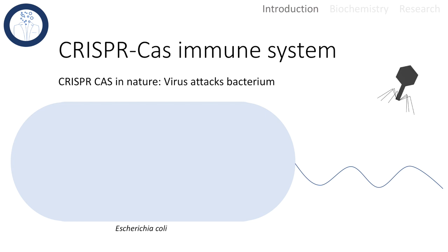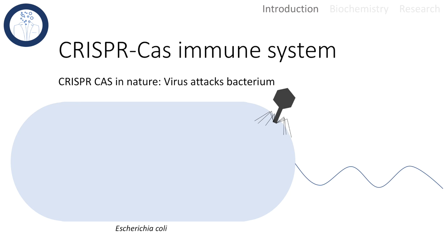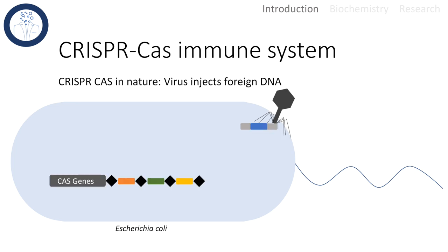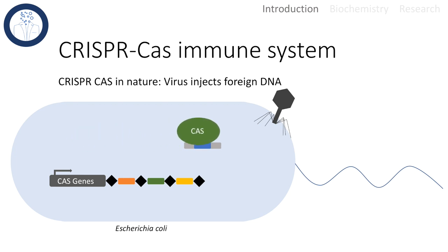To explain the process of the CRISPR-Cas immune system, we imagine a bacterium that is attacked by a virus. The bacteriophage injects the viral DNA, and in response the Cas genes are transcribed. The Cas protein will then take the viral DNA, cut it, and insert it into the bacterial genome.